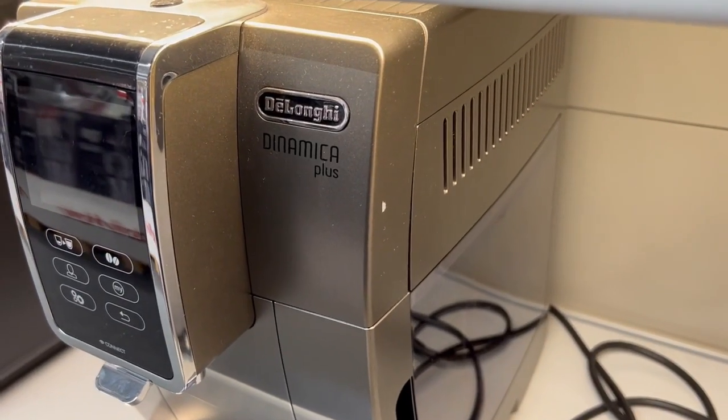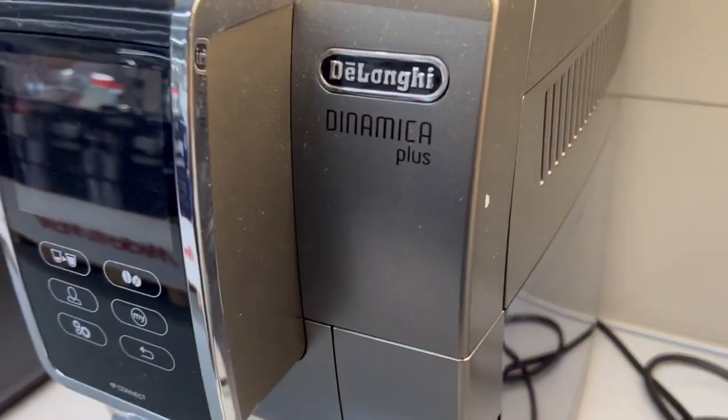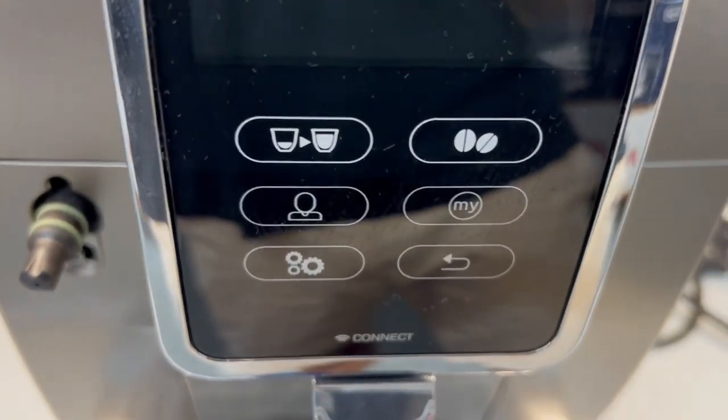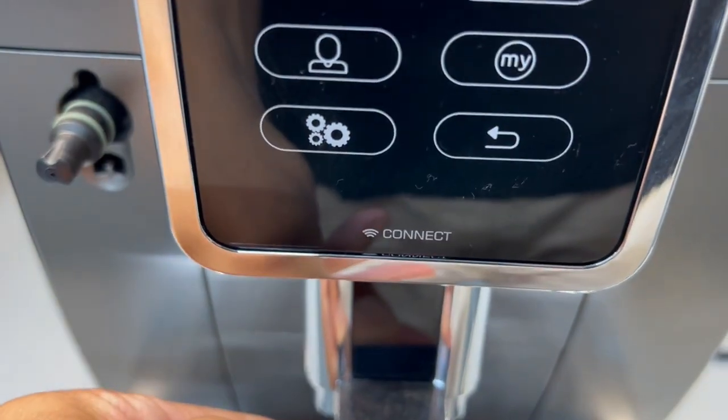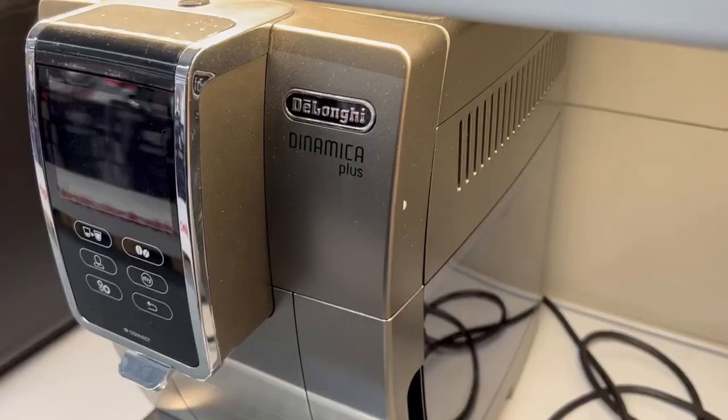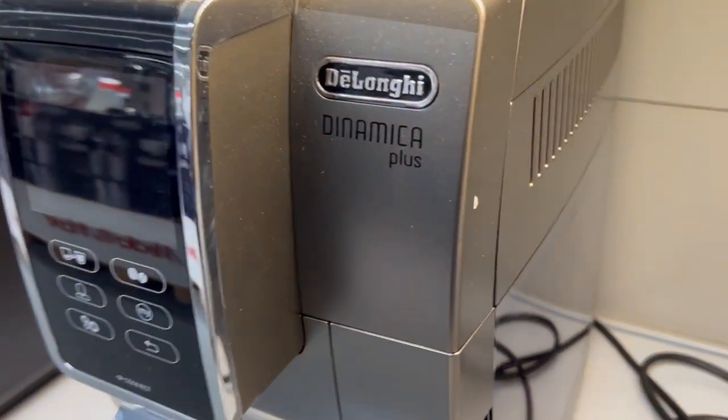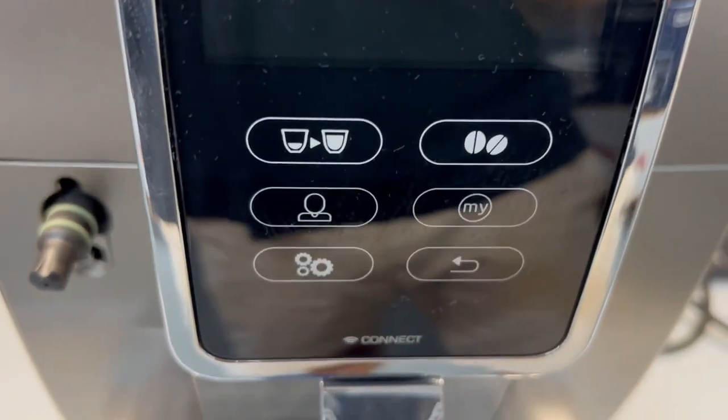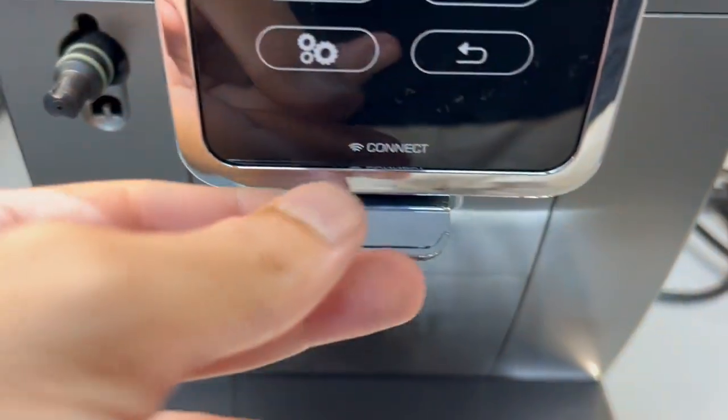But if you are more into those dark espressos, then you might consider going for the Dynamica Plus. All this is to say that in the realm of coffee makers, the DeLonghi Dynamica Plus triumphs for those craving a rich, customizable coffee experience with its automatic milk frothing and connected features. Its consistency and high-quality espresso sets it apart.